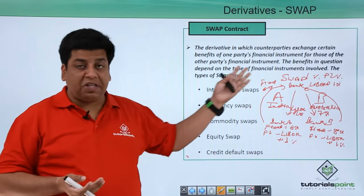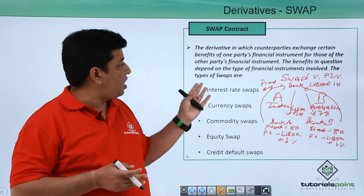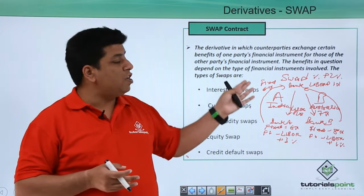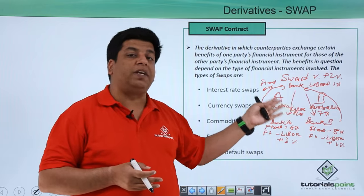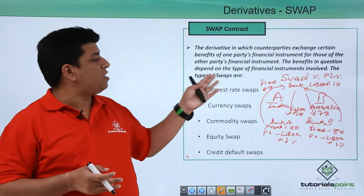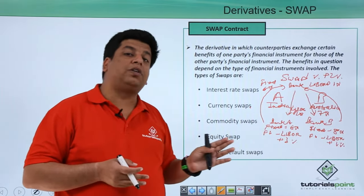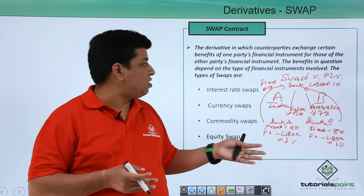It is a derivative in which counterparties exchange certain benefit of one party's financial instrument, here it is interest rate, for those of the other party's financial instrument, that is a different rate we have for both the parties.